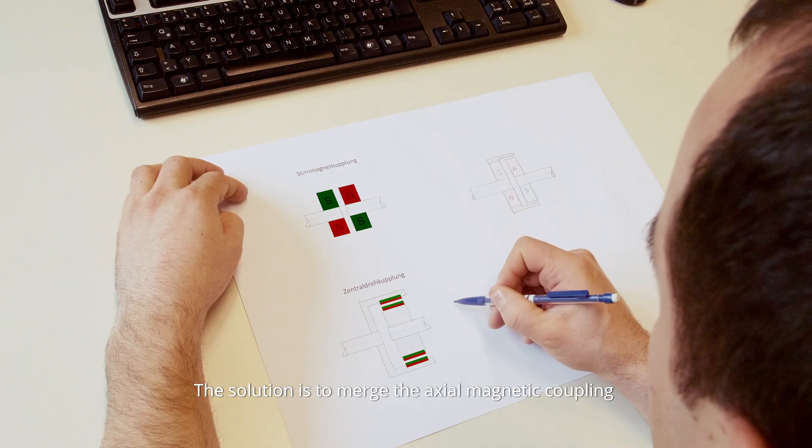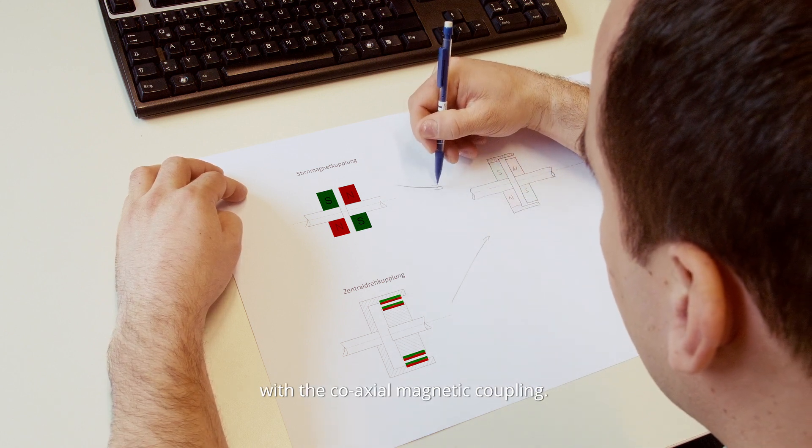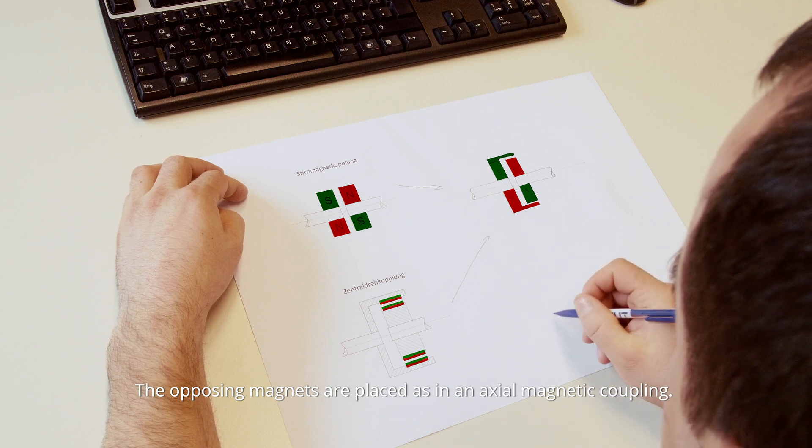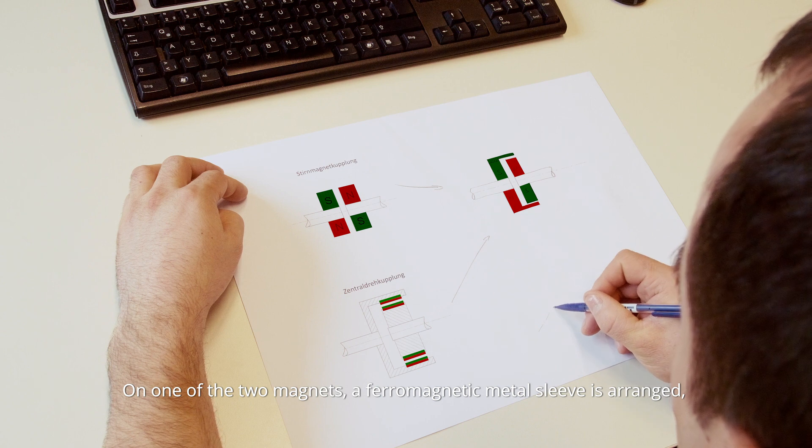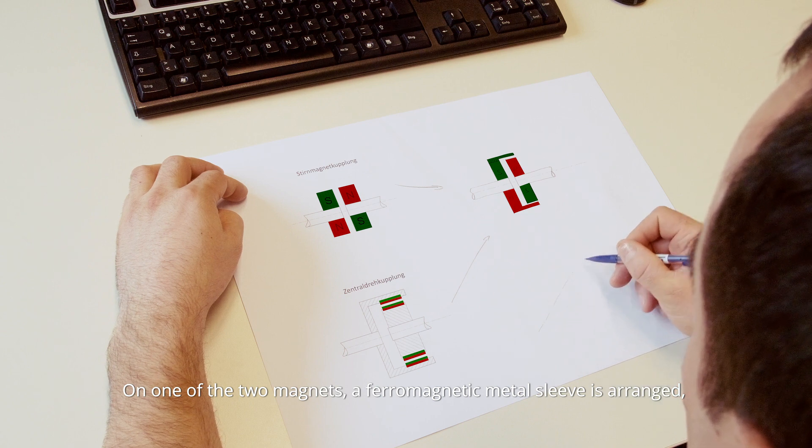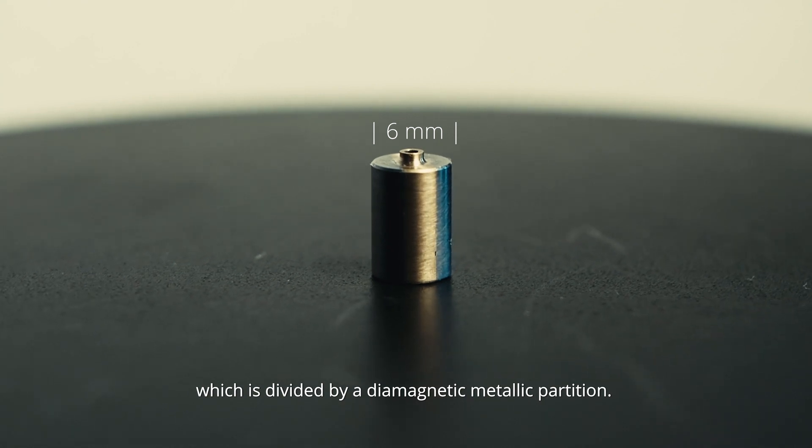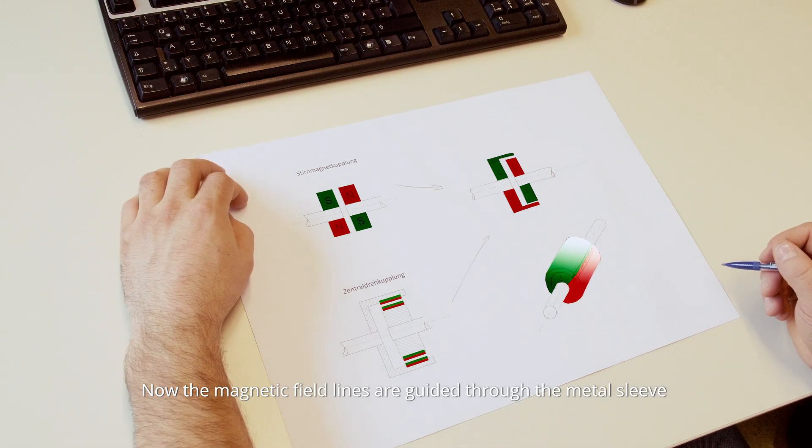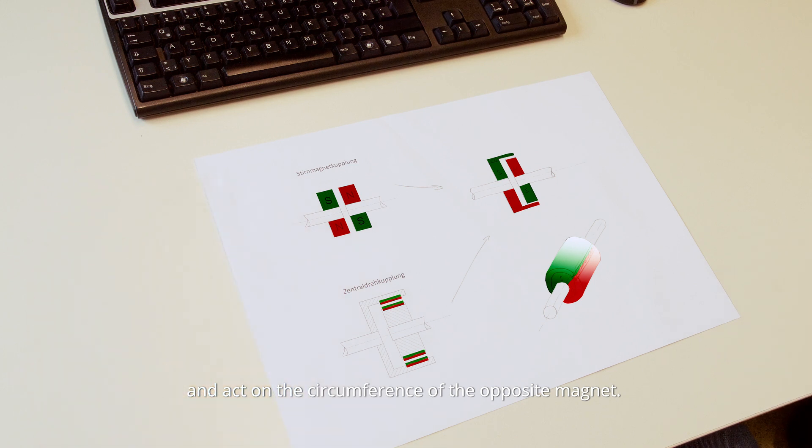The solution is to merge the axial magnetic coupling with the coaxial magnetic coupling. The opposing magnets are placed as in an axial magnetic coupling. On one of the two magnets, a ferromagnetic metal sleeve is arranged, which is divided by a dimagnetic metallic partition. Now the magnetic field lines are guided through the metal sleeve and act on the circumference of the opposite magnet.